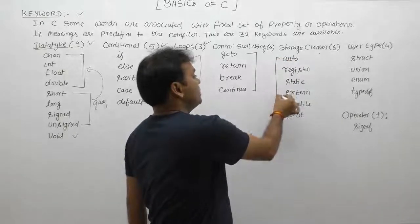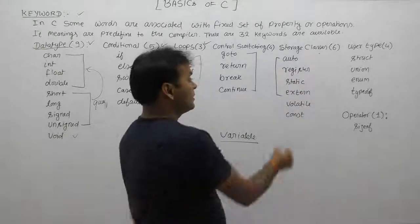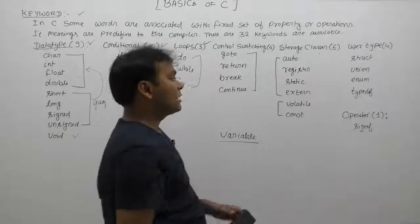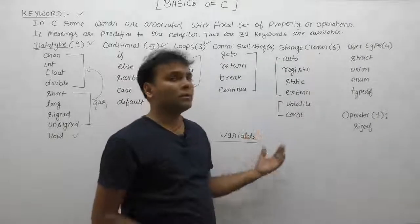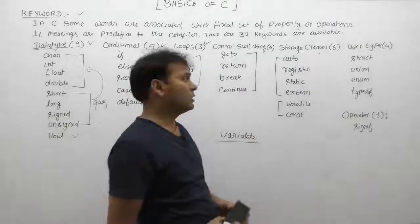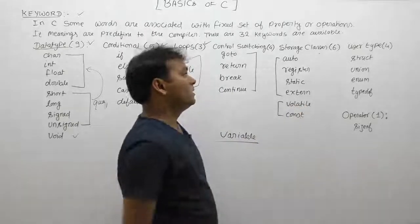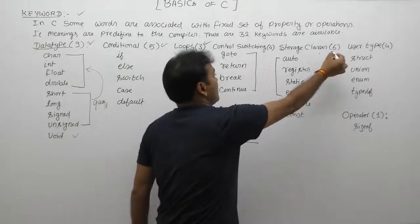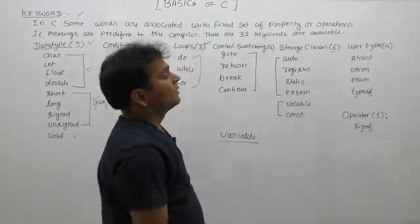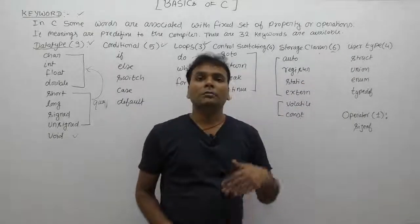There are four storage classes. Variables can be categorized as either changeable or not changeable. This property depends upon keywords like volatile or constant.